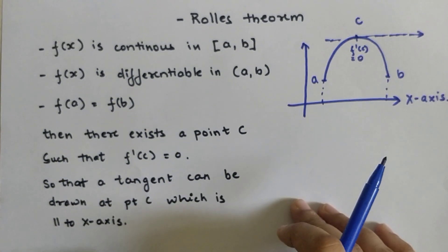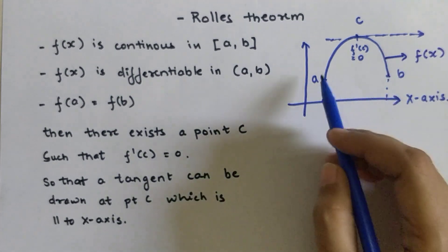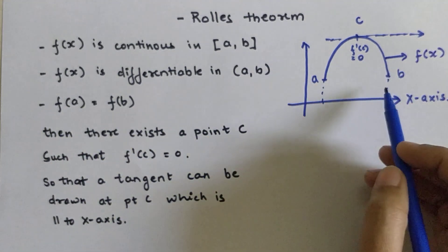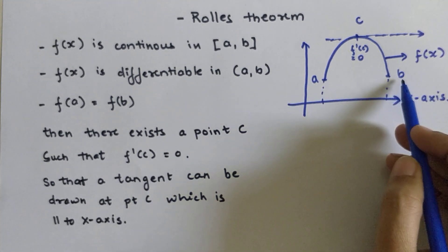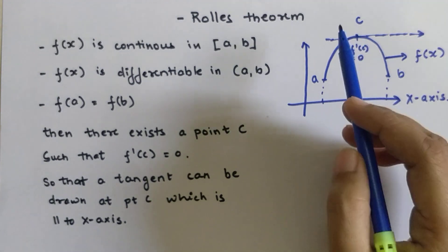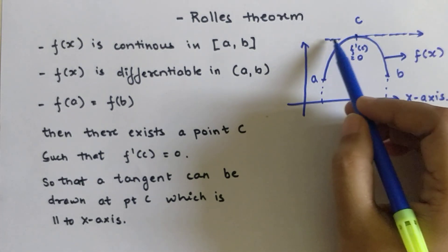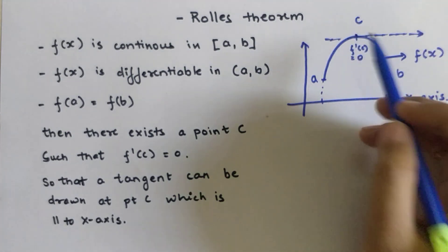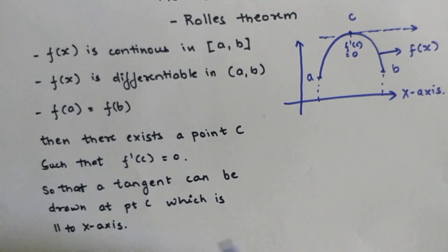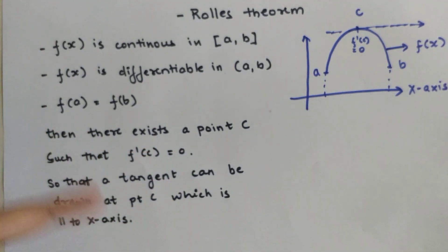At point c, a tangent can be drawn which will be parallel to the x-axis. Let's understand this through a graphical representation. This curve is your f(x), which is continuous and differentiable in the interval [a, b]. If f(a) equals f(b), then at some point c lying between a and b, when you set f'(c) = 0, there is a line that can be drawn at point c parallel to the x-axis.